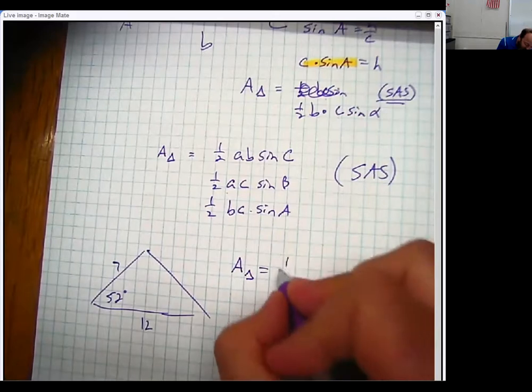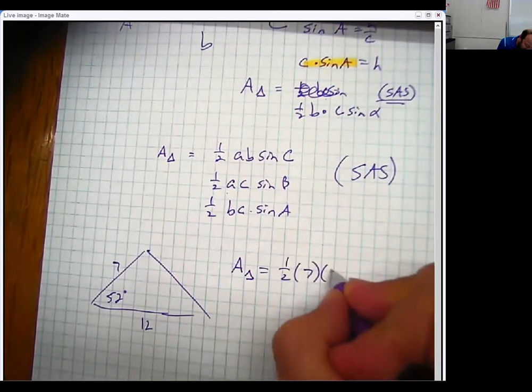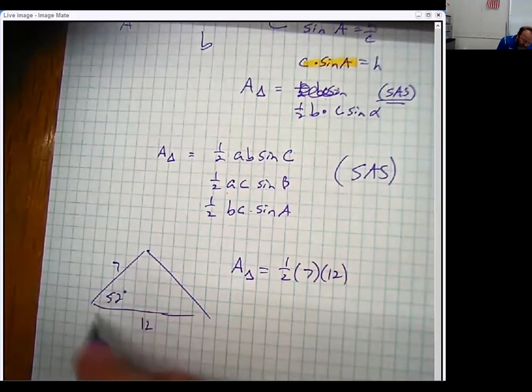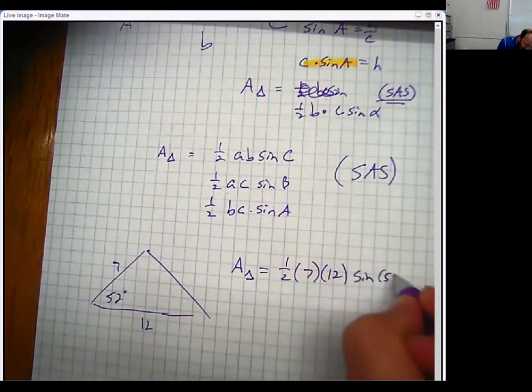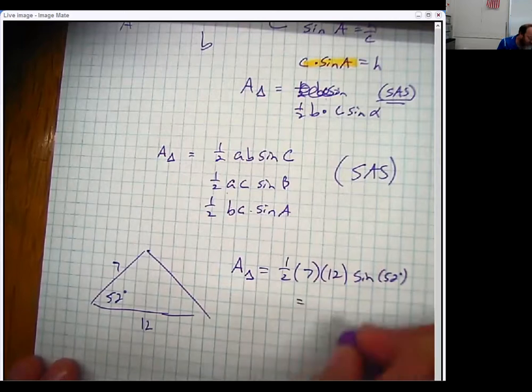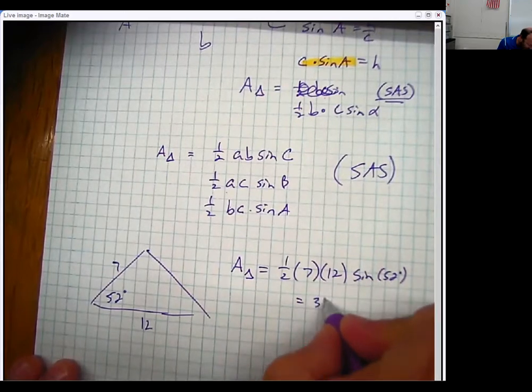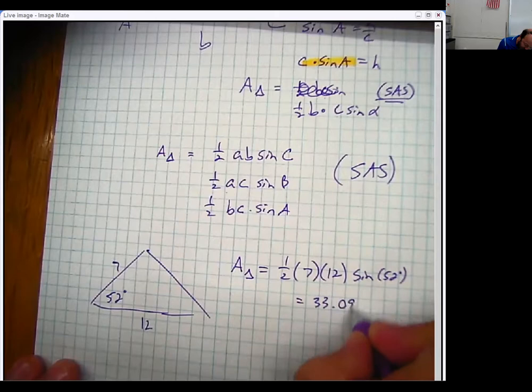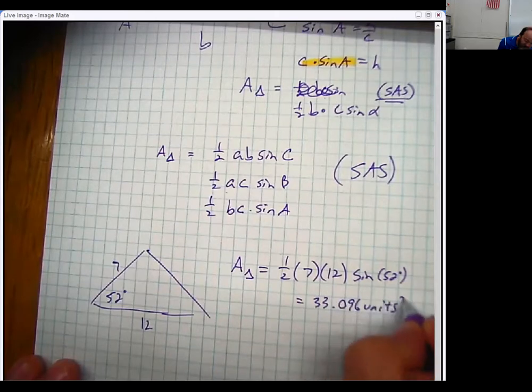I just say, fine, it's one half the product of the two sides that I do know times the sine of the angle in the middle, which is super fast, super easy to do. Pop that sucker into your calculator, and you've got 33.096 units squared.